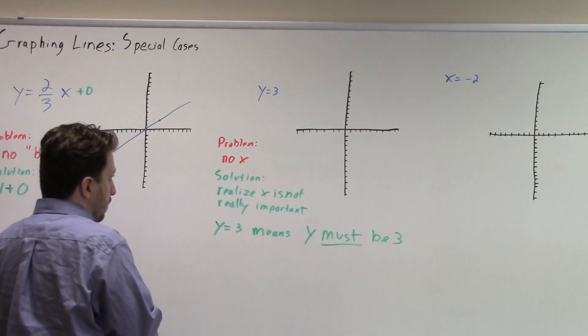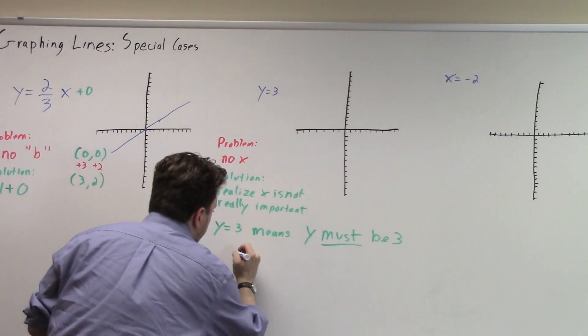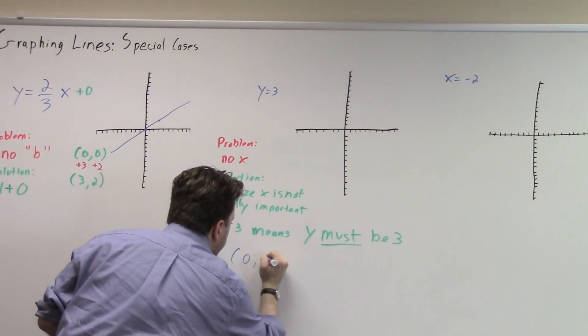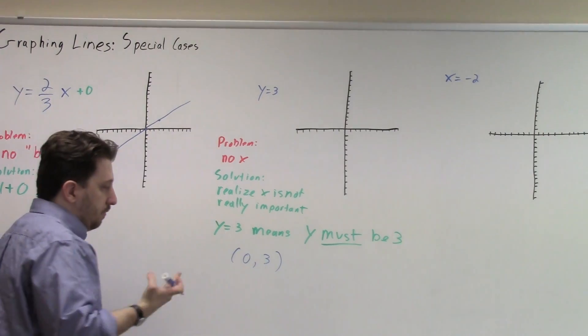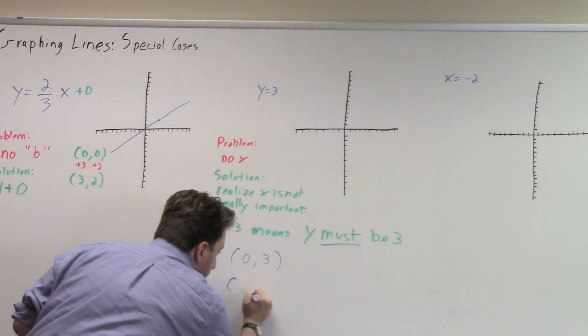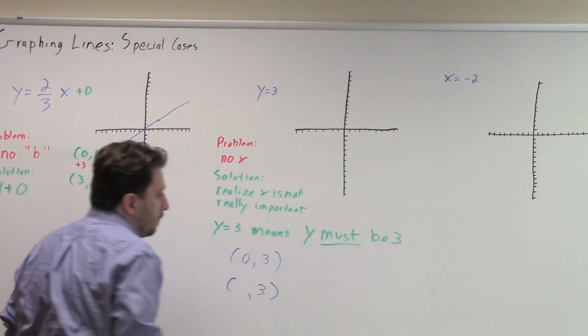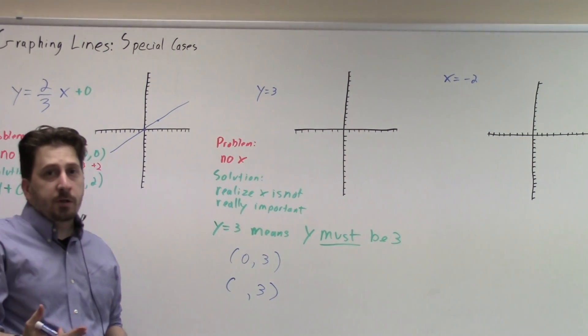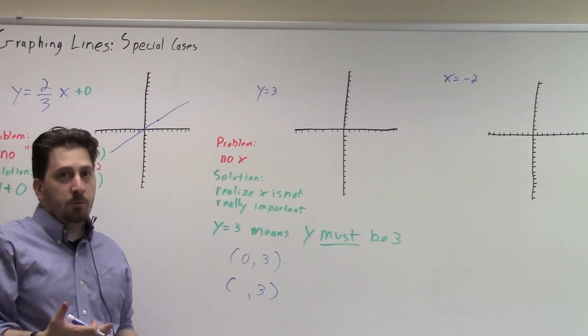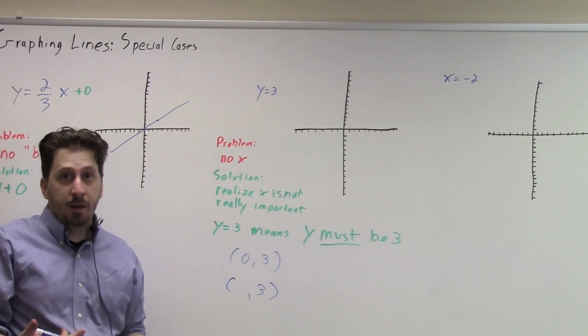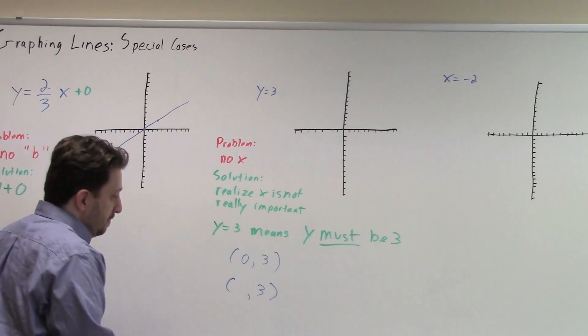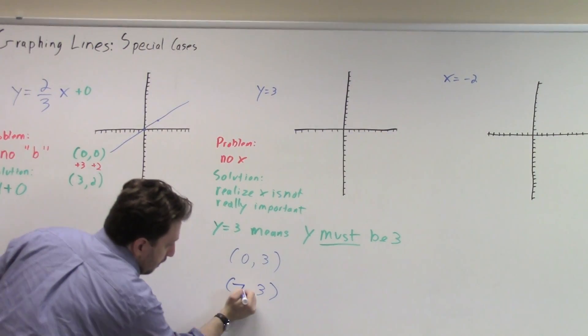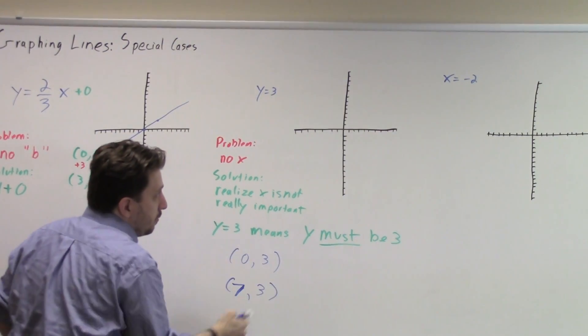Our first point is going to be the point zero, three. Now for our second point, our y value has to be three, but that x can be whatever you want there. So use whatever number makes you happy. I like seven because seven makes me happy. So I'm going to use seven here. And those are my two points.